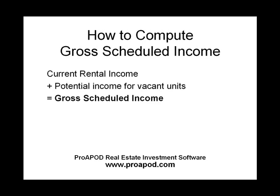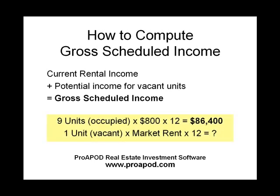Gross scheduled income is the rental income currently collected on all occupied units and the potential rental income for any vacant units. In other words, gross scheduled income is the total income that would be collected if all the units were occupied. For example, let's say the property has ten units and one vacancy. The nine occupied units are currently collecting eight hundred dollars a month, or eighty-six thousand four hundred dollars a year. For the vacant unit, you want to use what you consider a reasonable market rent, whether that be more or less than the other rents.